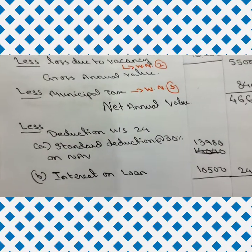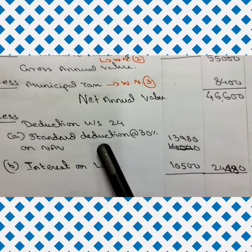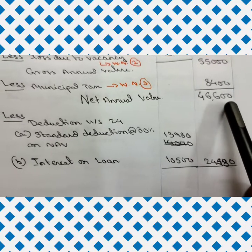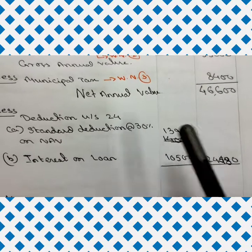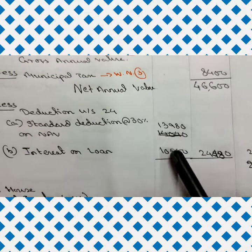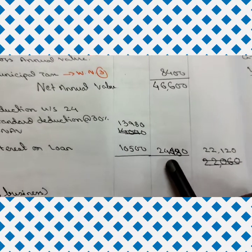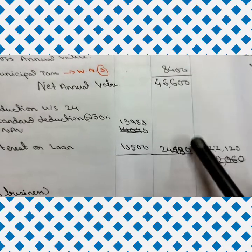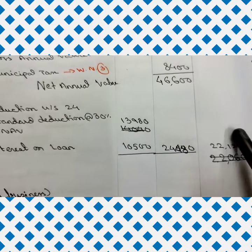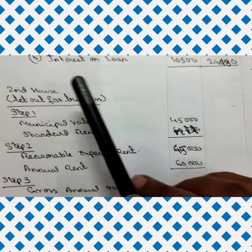From the NAV, there are two allowable deductions under Section 24. (a) Standard deduction at 30% on NAV: 30% of 46,600 = 13,980. (b) Interest on loan: 10,500. Total deduction = 24,480. Deducting 24,480 from NAV of 46,600, the income from the first house is 22,120.